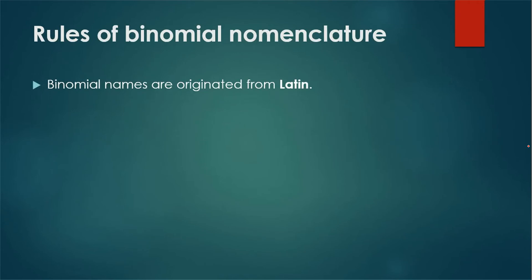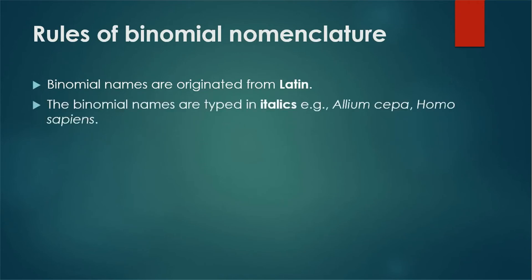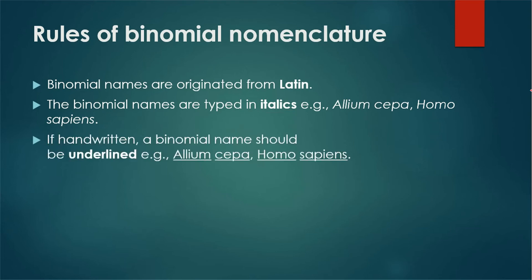The rules of binomial nomenclature are: names are originated from Latin; names are written in italics — as you can see with Allium cepa and Homo sapiens, they are not written in a straight form but in italic. If handwritten, a binomial name should be underlined. Importantly, one underlining is not acceptable — the genus name is separately underlined and the species name is separately underlined.